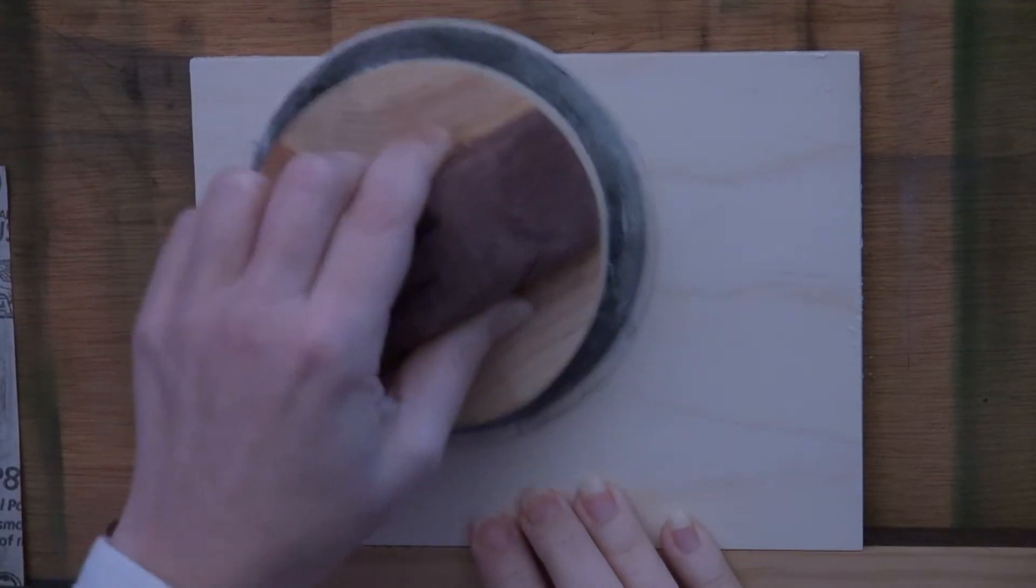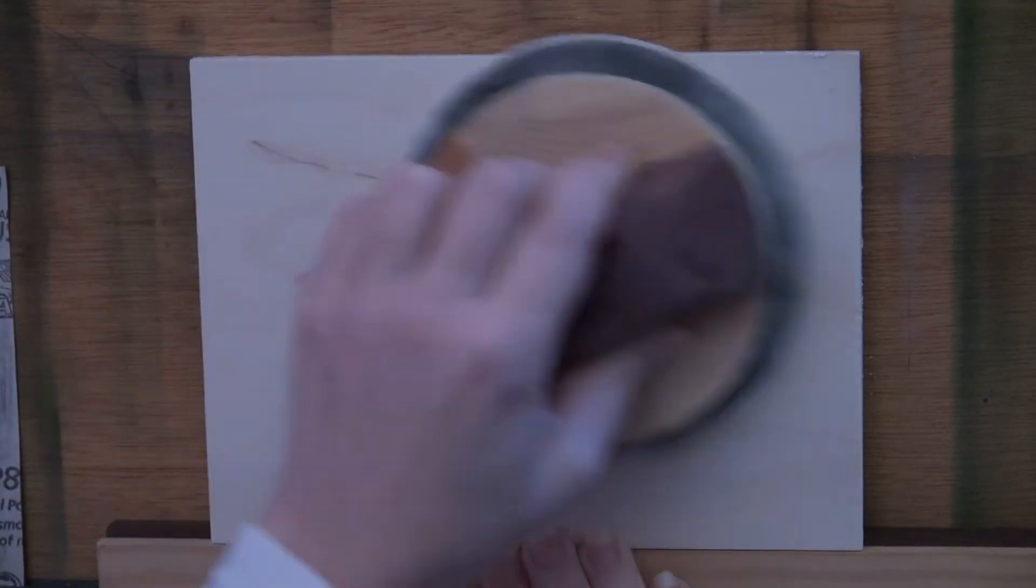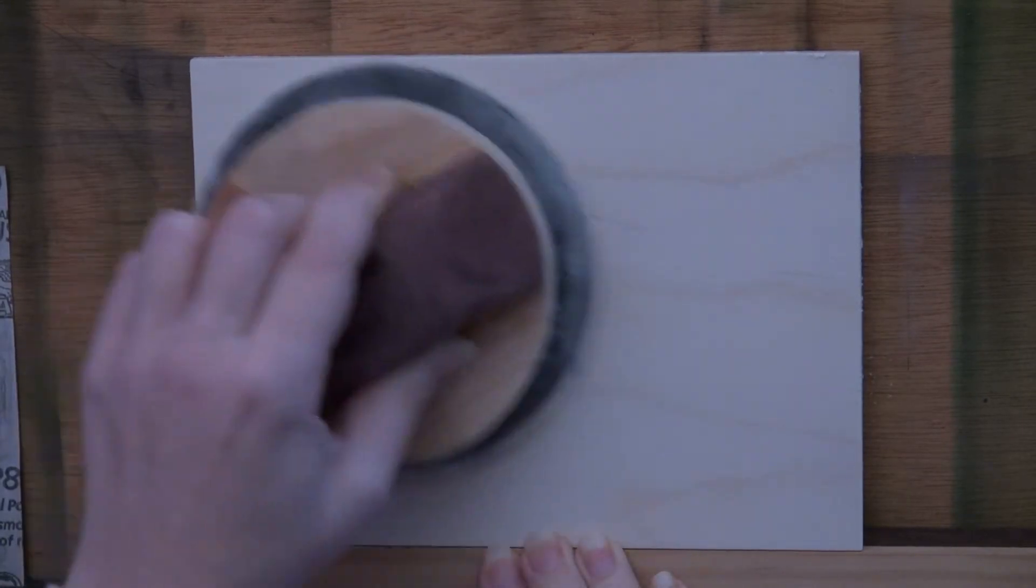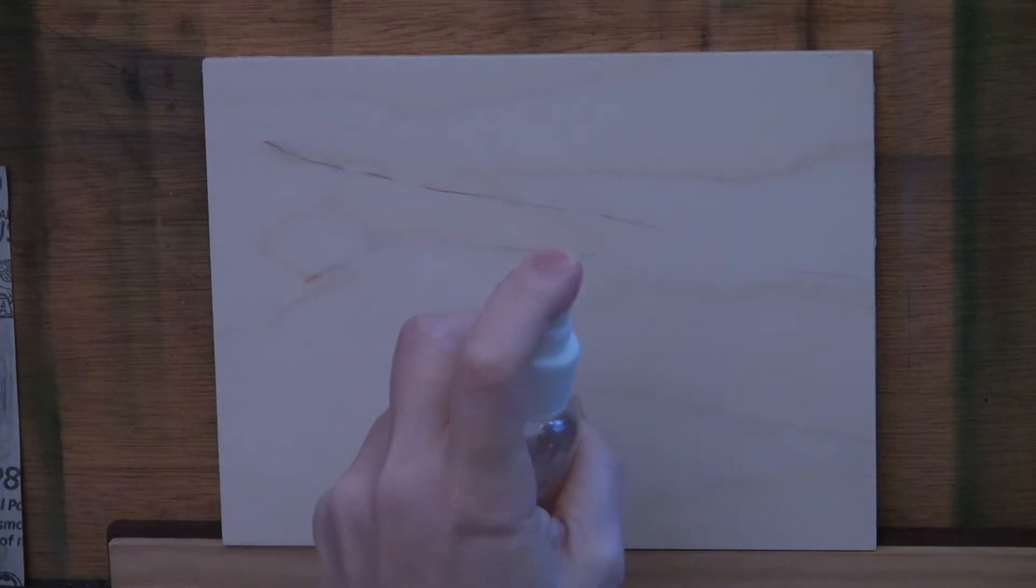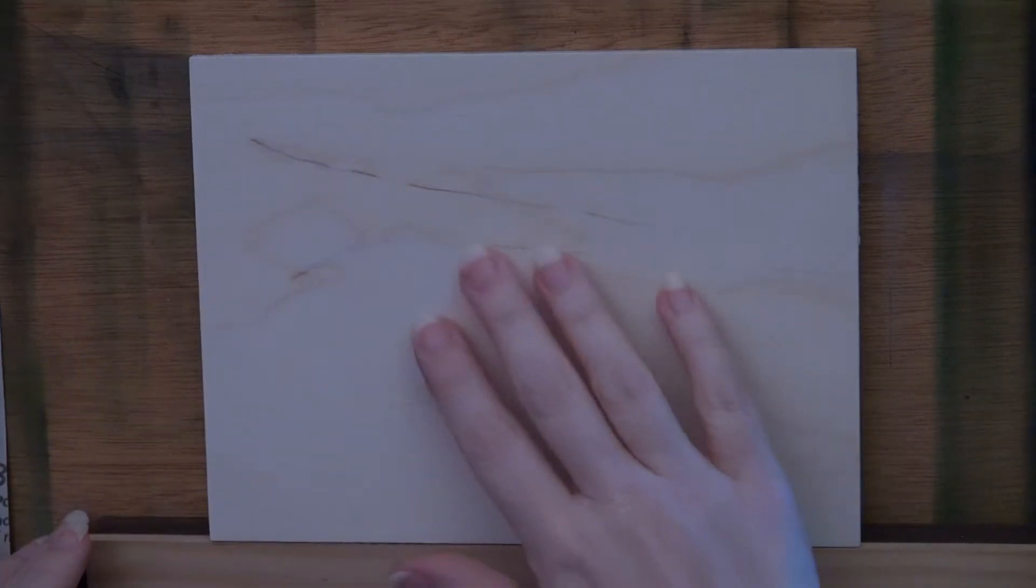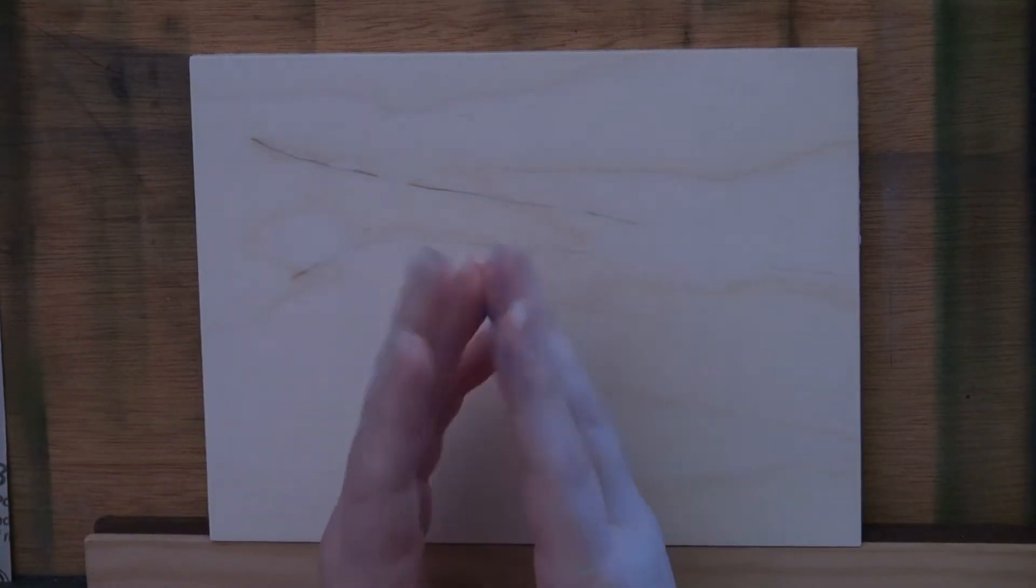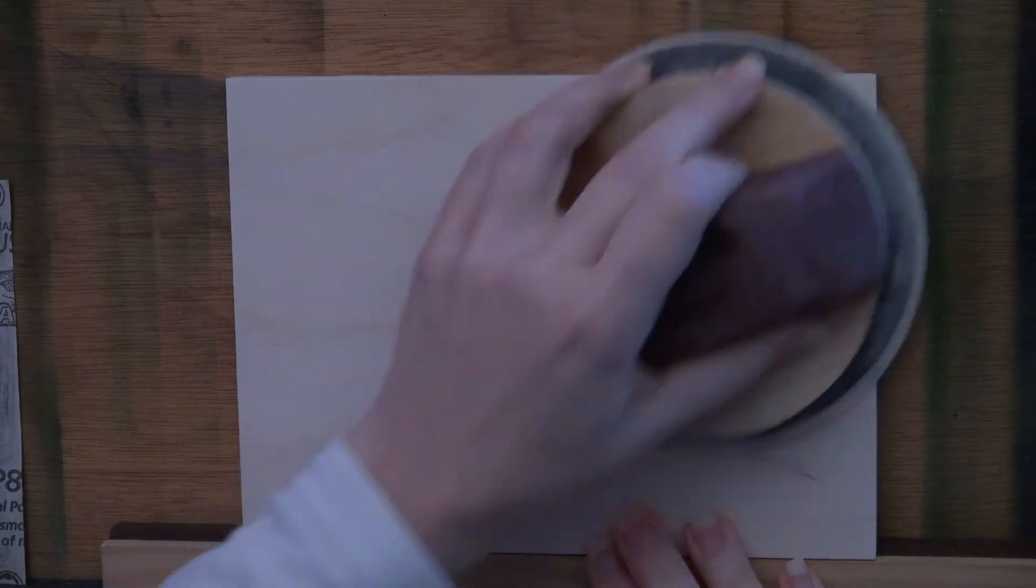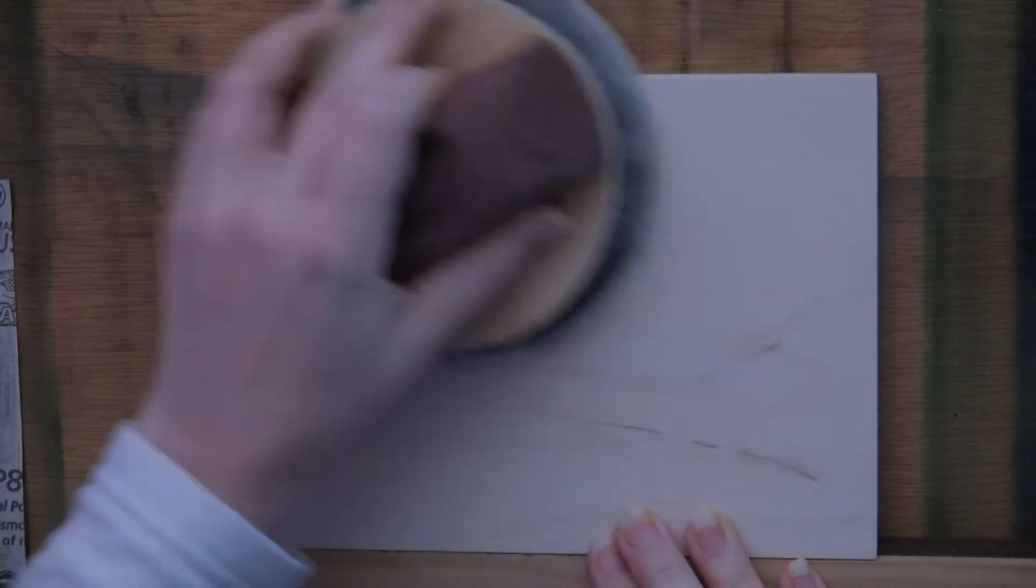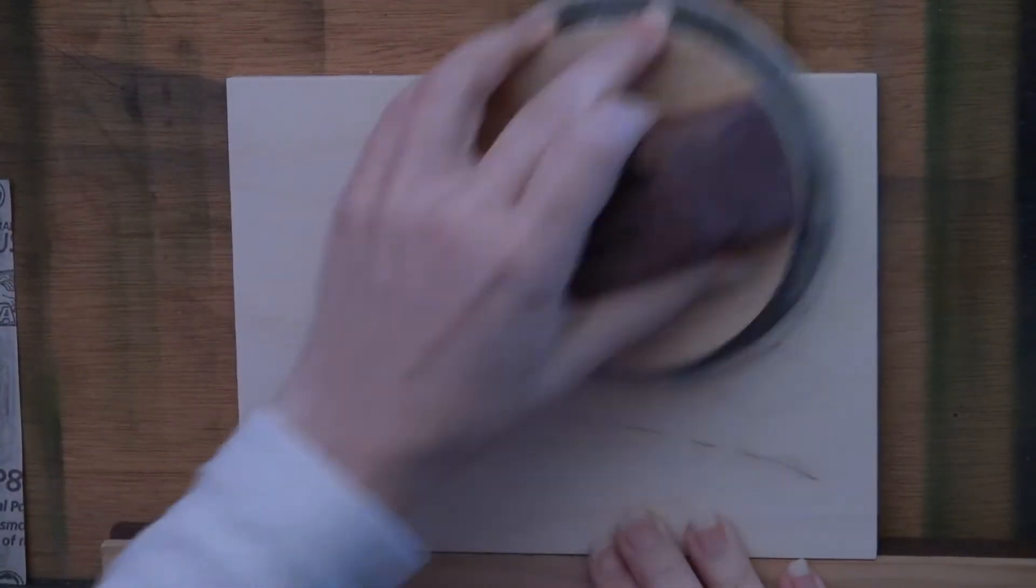Thoroughly sand the board with at least 220 grit sandpaper. Then apply some water to the board. Let the board dry completely. Then sand the board again with at least 220 grit sandpaper. Now the board is ready.